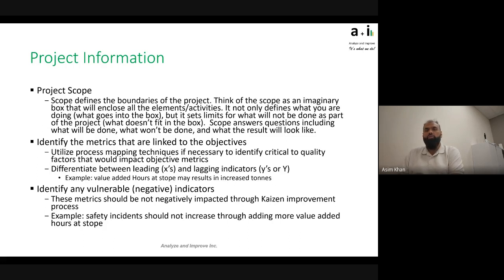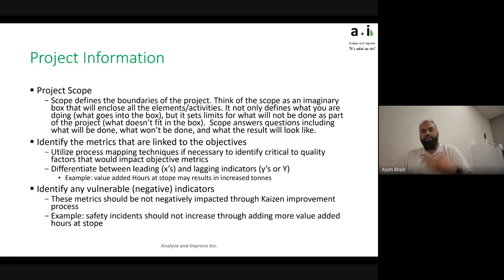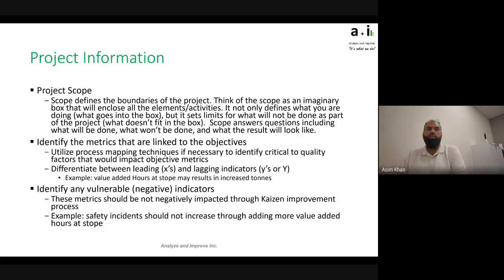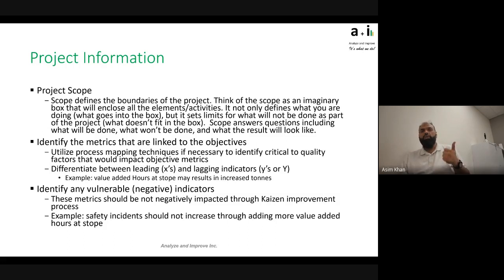Leading indicators are something the project would directly impact and you'll see the results quickly, versus lagging indicators where there's an indirect impact that takes time to show. Also identify vulnerable or negative indicators — KPIs that could be negatively impacted by your project. If this is a case, identify it in the project definition so you can keep an eye on it and ensure your project isn't working on something negative for other parts of the company. This also becomes useful during prioritization when evaluating whether this is the best project for the same KPI.